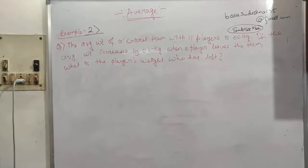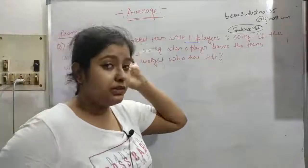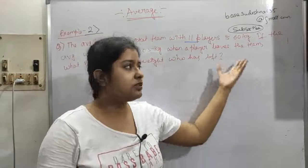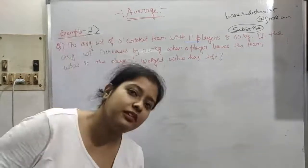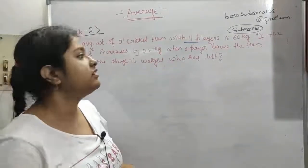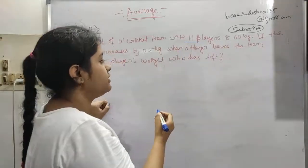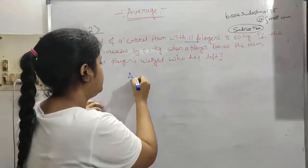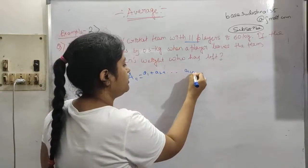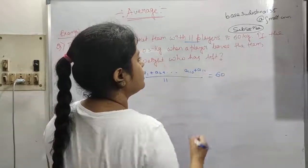Now let us see this example: the average weight of a cricket team with 11 players is 60 kg. Let us say the players are a1, a2, ... a10, a11. Their average weight is given as 60 kilos.